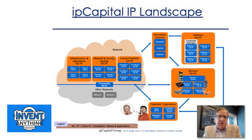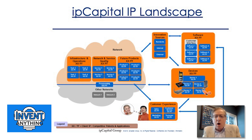Another final example is an IP landscape of a network — showing things in the cloud, inside devices, at the customer level, consumer experience between the network and customer devices, and software. These interrelationships reflect what the customer was worried about: quality and where future products are coming from. In just the last few minutes, I've shown you a number of views of the IP landscape contrasted to automated patent maps and visualizations.